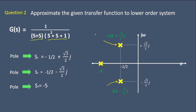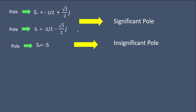The complex poles are called the dominant or significant poles. The pole at s = −5 is an insignificant pole since it is far from the origin.